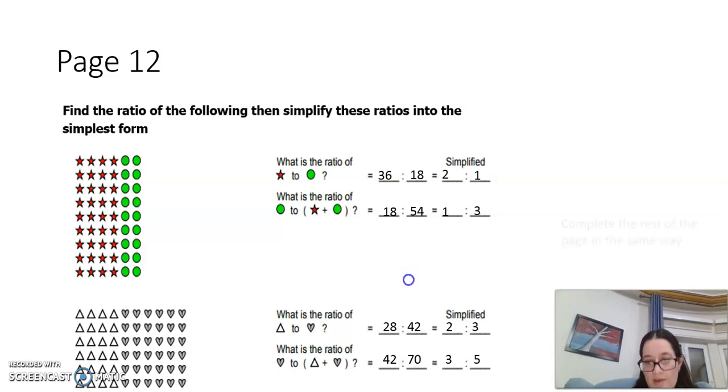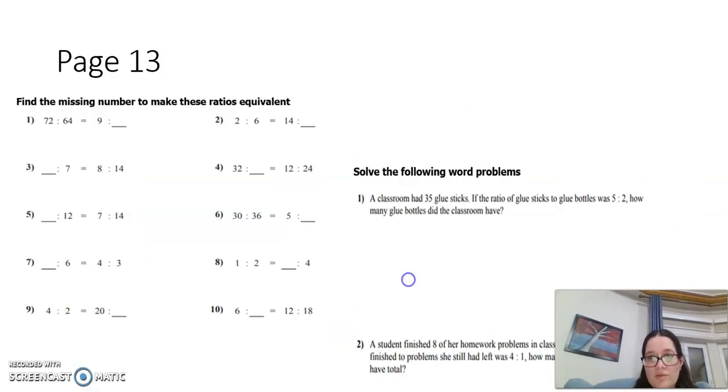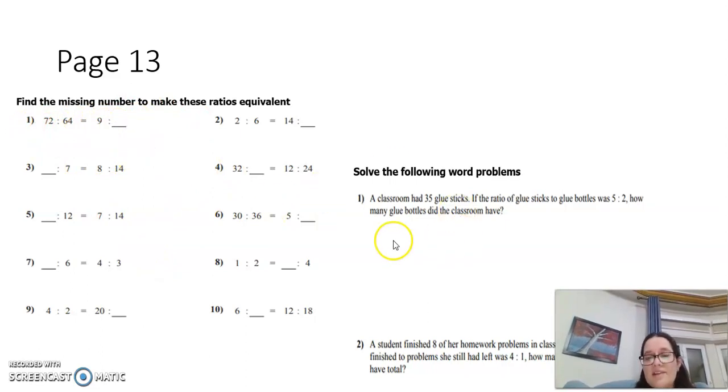Move on to page 13. In page 13, we have two questions. The first one is to find the missing number in order to make both ratios equivalent, and the second one is solving word problems. Let me start to help you find the equivalent ratio. 72 to 64 is equal to 9 to something. How does the 72 become 9? It's divided by 8, so 64 divided by 8 is going to be 8.